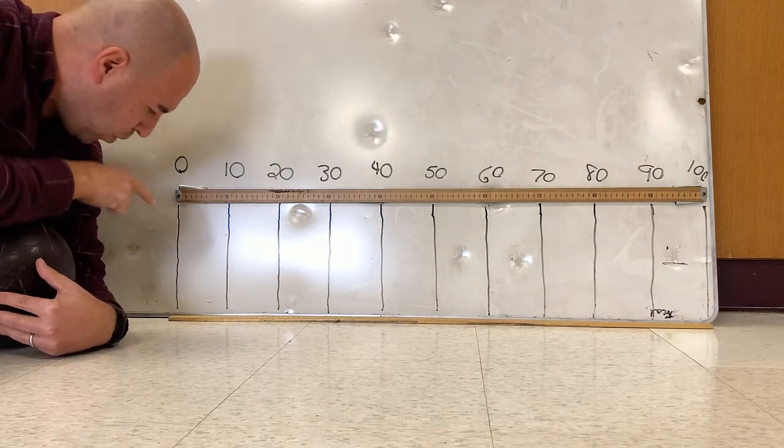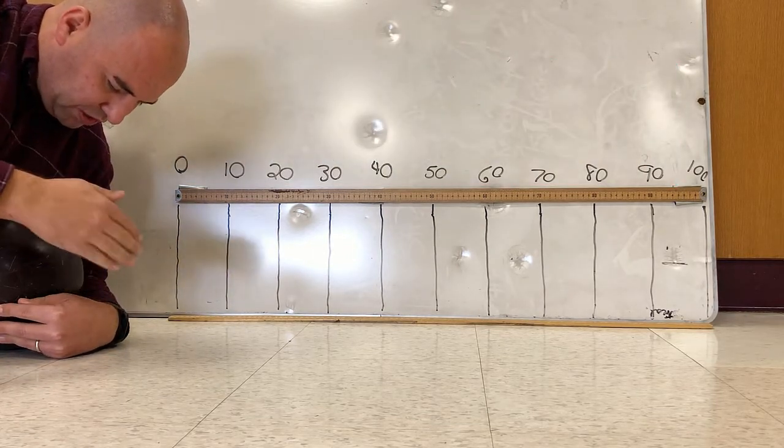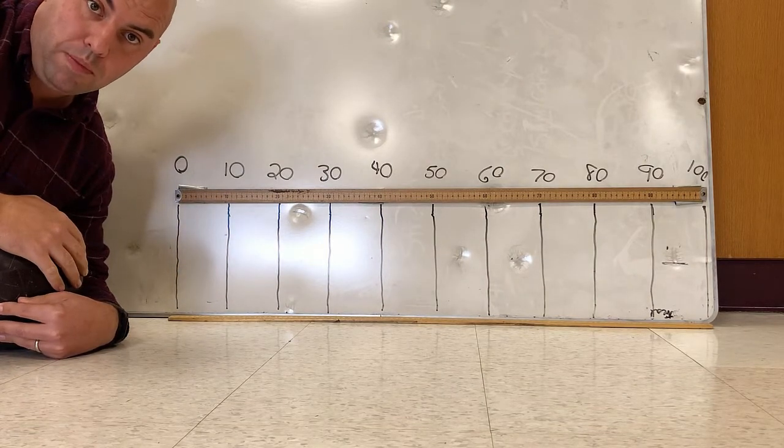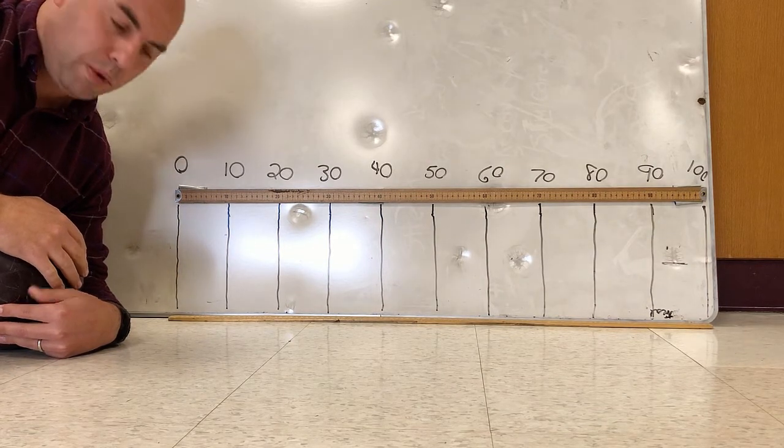What we'll do is we'll say when the front of this bowling ball hits the zero mark, that's when it starts timing. Okay, and yeah, so here we go.